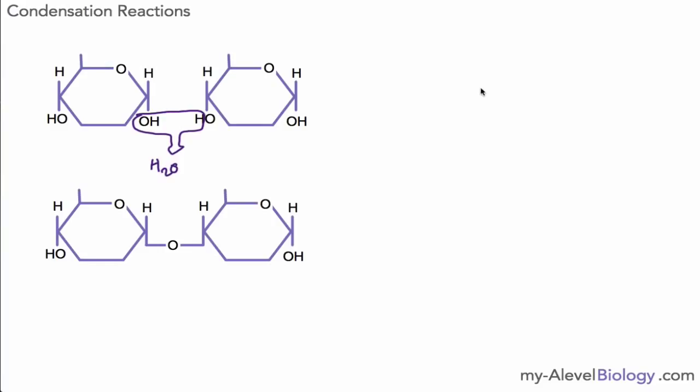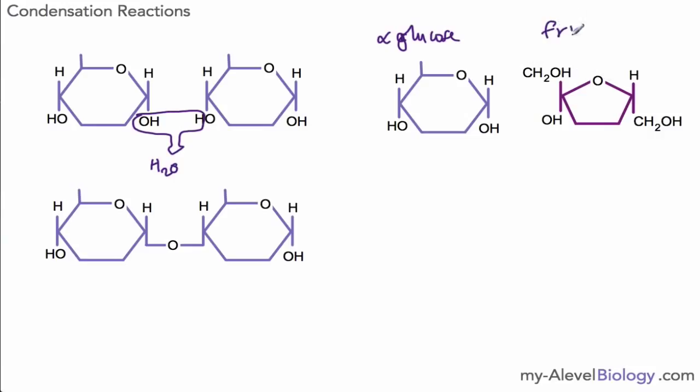You should also be able to apply this to slightly different carbohydrates. Here I've got two carbohydrates - you should recognize this one by now as alpha glucose. This is not one that you need to know or remember how to draw, but this is actually fructose, and you do need to know the name fructose. And when you join glucose and fructose together you get a disaccharide called sucrose.